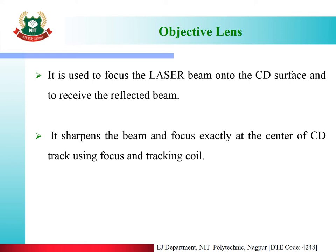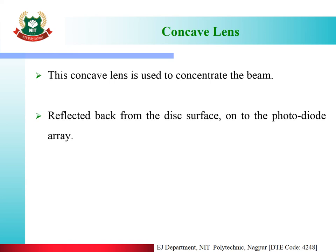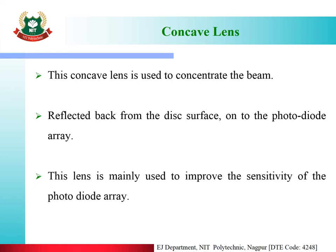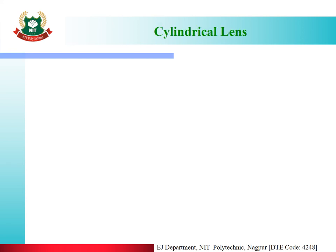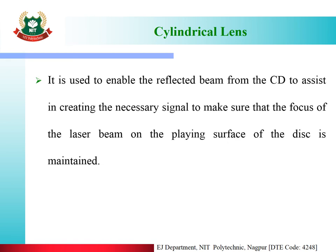The concave lens is used to concentrate the beam reflected back from the disk surface onto the photodiode array, and is mainly used to improve the sensitivity of the photodiode array. The cylindrical lens is used to enable the reflected beam from the CD to assist in creating the necessary signal to maintain the focus of the laser beam on the plane surface of the disk.